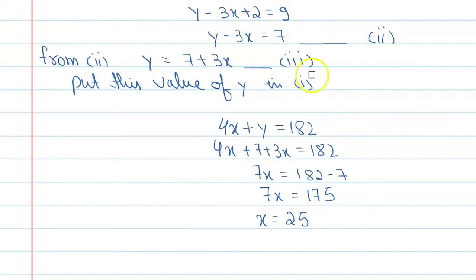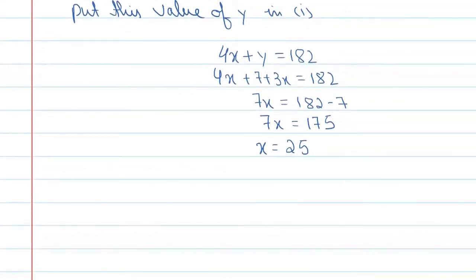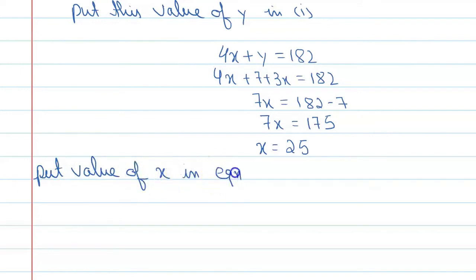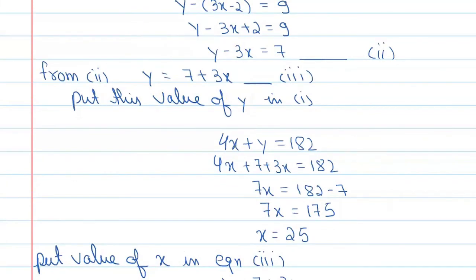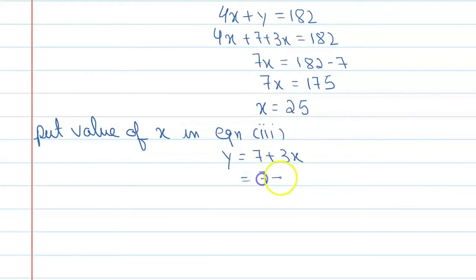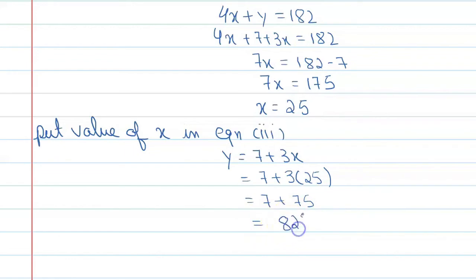Now to find the value of y, put the value of x into equation 3: y equals 7 plus 3x. So y equals 7 plus 3 into 25, which is 7 plus 75, giving y equals 82 degree.